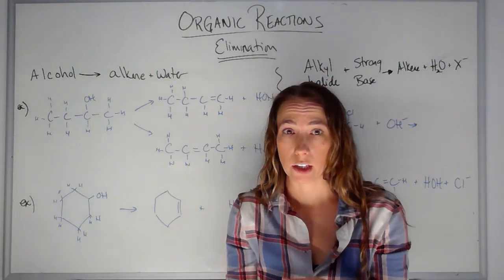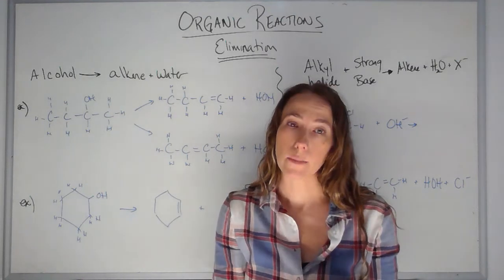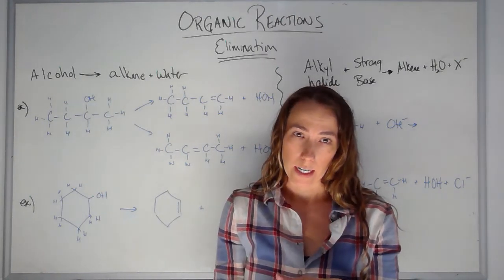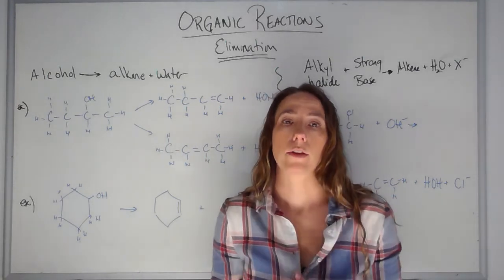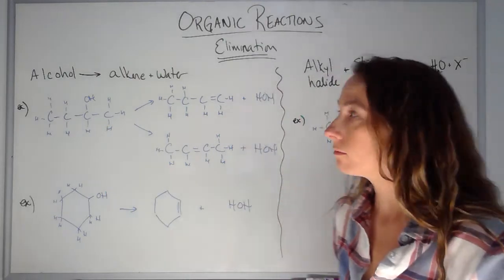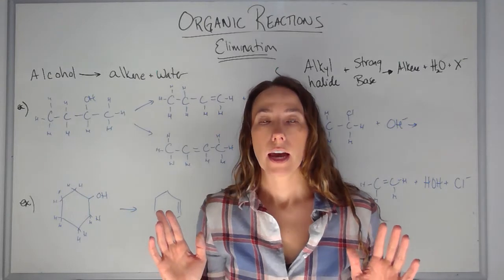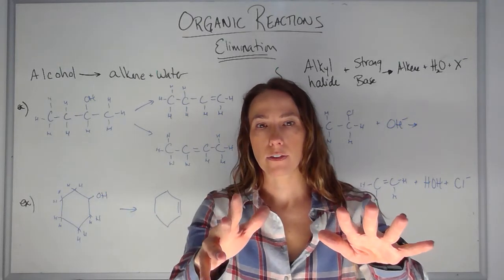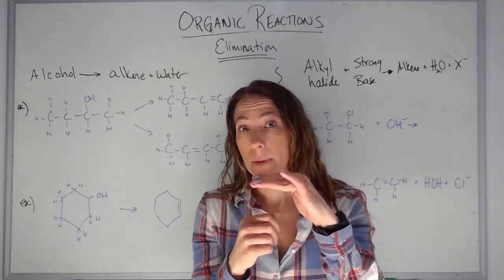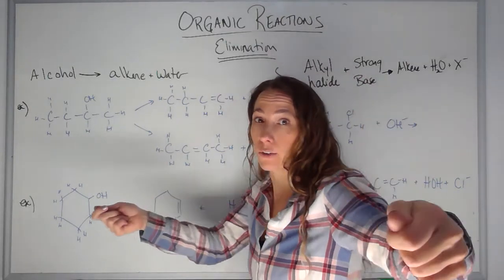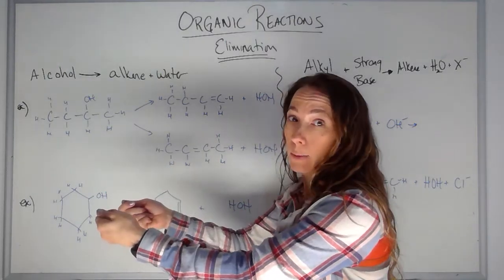Alberta Education has decided we're going to cover three elimination reaction types. There are more that you'll see at university, but these are the three covered in our curriculum. In essence, you're going to take a saturated compound and rip off two things in order to form a double bond. So it's like the opposite of addition — if you've already grabbed something, you let it go to make a double bond happen.